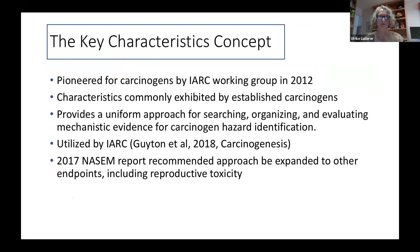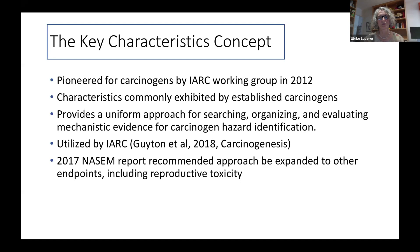The concept of key characteristics was originally pioneered for carcinogens by an International Agency for Research on Cancer working group in 2012. That group of experts identified characteristics commonly exhibited by established carcinogens, with the idea that these characteristics could be applied to flag other chemicals as potential carcinogens. The approach provides a uniform method for searching, organizing, and evaluating mechanistic evidence for carcinogen hazard identification. It is currently being utilized by IARC in their assessments. In 2017, the National Academy of Sciences, Engineering, and Medicine issued a report recommending that the key characteristics approach be expanded to other endpoints, including reproductive toxicity.